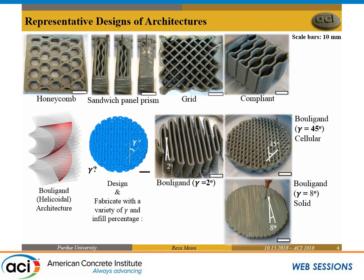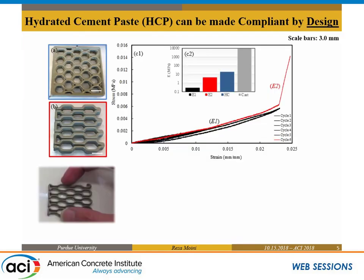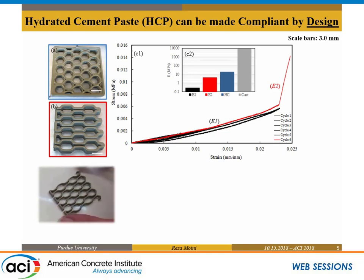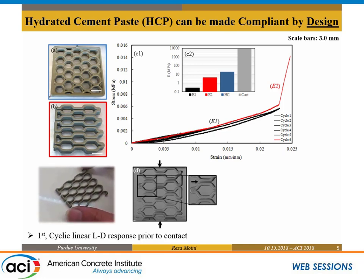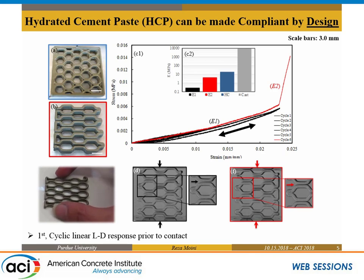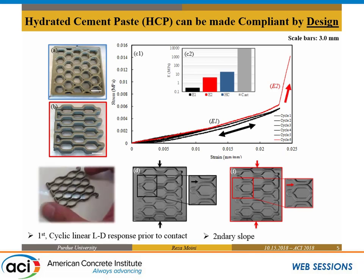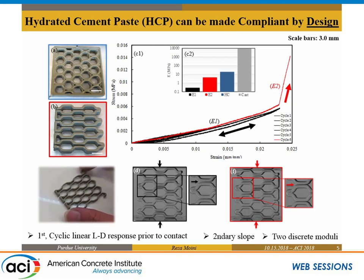The bottom elements — we're going to present some mechanical response on them, so keep in mind how we test them for flexural strength. If you take that compliant architecture and test it, you see something different than what you're used to for a cement paste material. You can actually bend it, just by controlling your design and the architecture of the material. Before the filaments make contact, you get a cyclic linear response, and once they make contact, you get a secondary response — essentially two discrete moduli, or two discrete responses in your load-displacement curve.